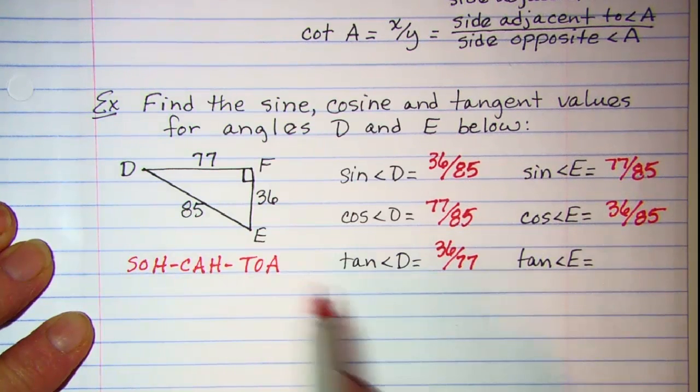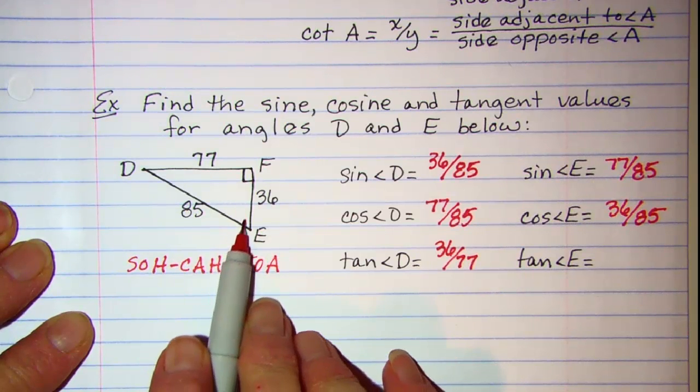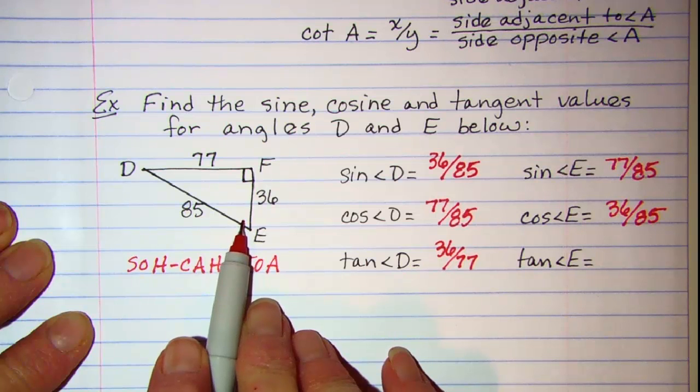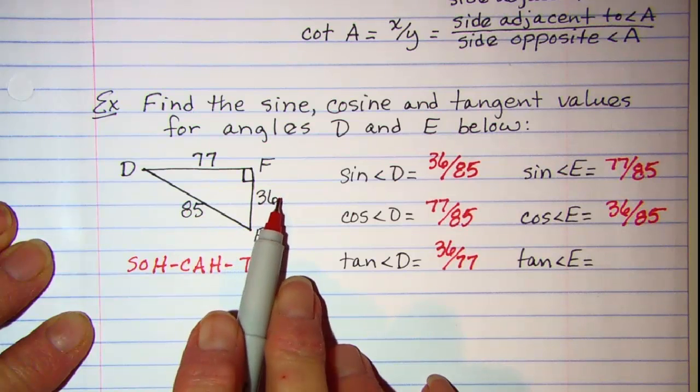And then my tangent, I need opposite over adjacent. So sitting in angle E, I need opposite which is 77 over adjacent which is 36.